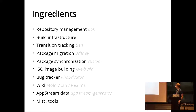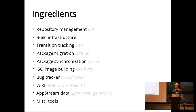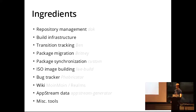What you need for building a derivative is mainly repository management, which is the Debian archive kit — in this case for Tanglu. We need build infrastructure to make packages. We originally thought we wouldn't need to do transition tracking, but if you base on Debian testing, you actually require that in order to do uploads and rebuild things in the right order. Testing turned out to be not as easily buildable as we originally thought. This is also the reason why we need Britney to do package migration. We also need to synchronize packages with Debian, merge patches applied downstream, build ISO images, track bugs, have a wiki, generate upstream metadata so stuff shows up in GNOME Software, and a lot of miscellaneous tools for various other smaller tasks.